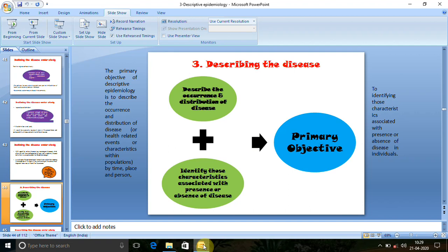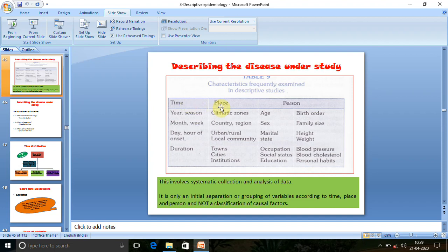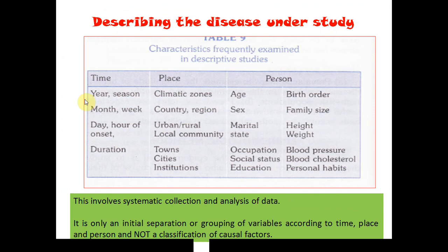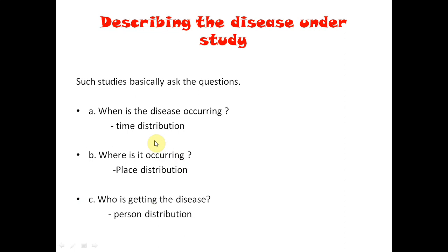The next part is the most crucial part of our descriptive study — that is describing the disease. We need to describe the disease under three headings: time, place, and person. We commonly ask three questions: when is the disease occurring? Where is it occurring? And who is getting the disease? These three things — time, place, and person — the when, where, and who — are the most important things in descriptive study.